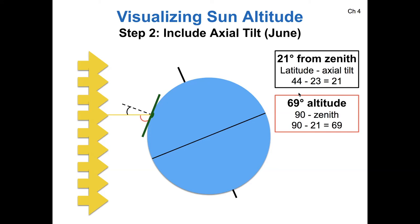If you want to find the altitude in any random location, what you do is you take the latitude minus the axial tilt, and then you take 90 degrees minus that previous number. This works for the Northern hemisphere.